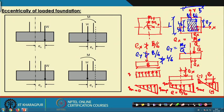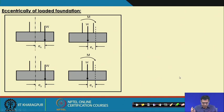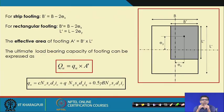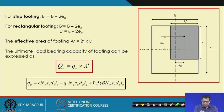Because of eccentric loading, the effective width B' and effective length L' of the foundation are reduced. The effective width is calculated as B' = B − 2E_x, the effective length as L' = L − 2E_y, and the effective area A' = B' × L'. The ultimate load capacity is then Q_U = q_U × A'.